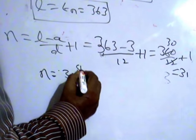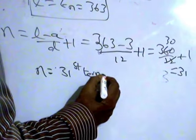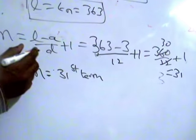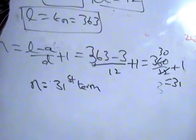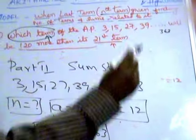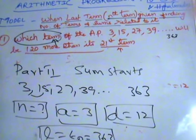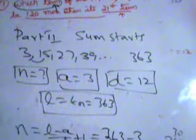Therefore, the 31st term is 120 more than the 21st term. This is the answer.